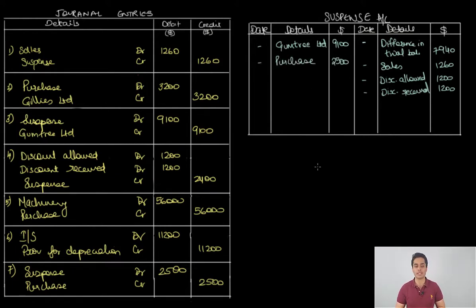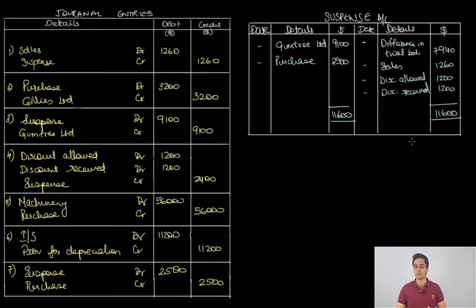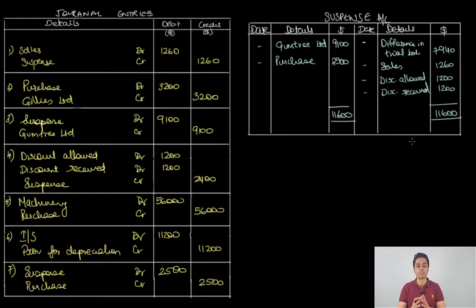Once we have recorded all entries in the suspense account, let's take totals on both sides. The debit side totals 11,600, and the credit side also totals 11,600. Since both sides are equal, we can say that all errors have been found and rectified — specifically, all one-sided errors affecting the trial balance. There could still be two-sided errors not yet found, but all trial balance errors have been corrected.